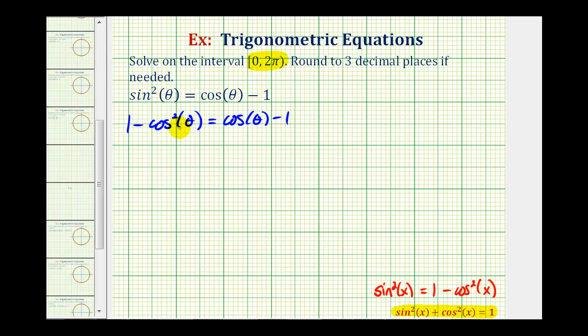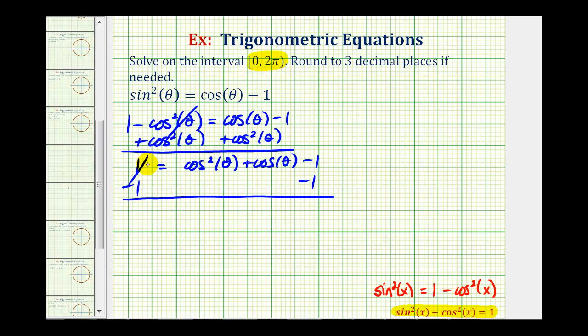Now, because we have a squared term, we'll treat this as a quadratic equation, so we'll set it equal to zero and see if it factors. So, for the next step, we'll add cosine squared theta to both sides. We'll have one equals cosine squared theta plus cosine theta minus one. And now, we'll subtract one on both sides. So, we have zero equals cosine squared theta plus cosine theta minus two.